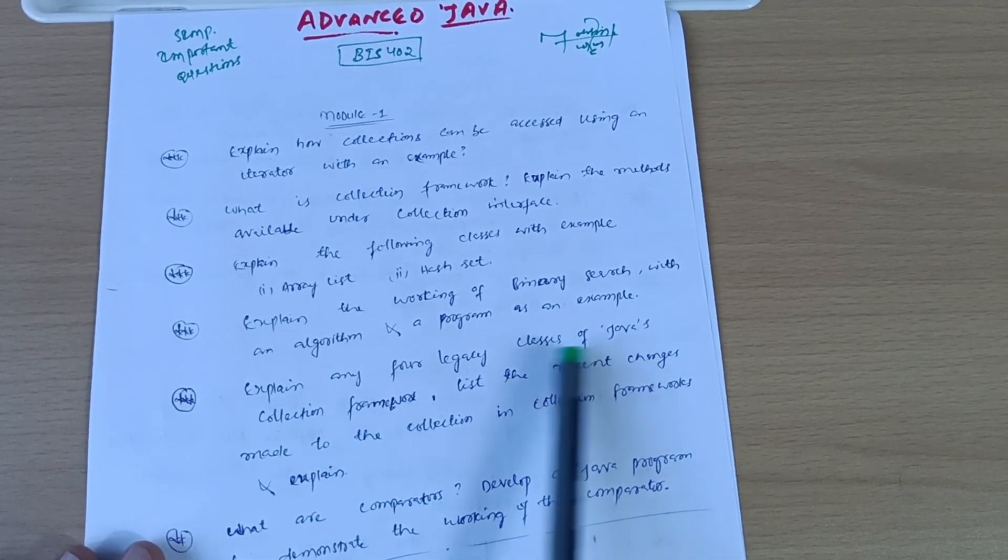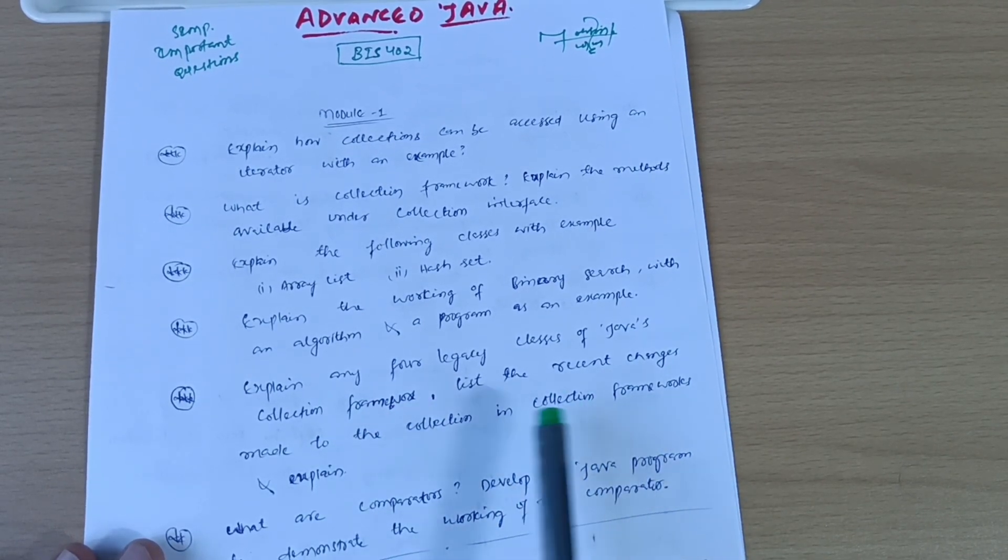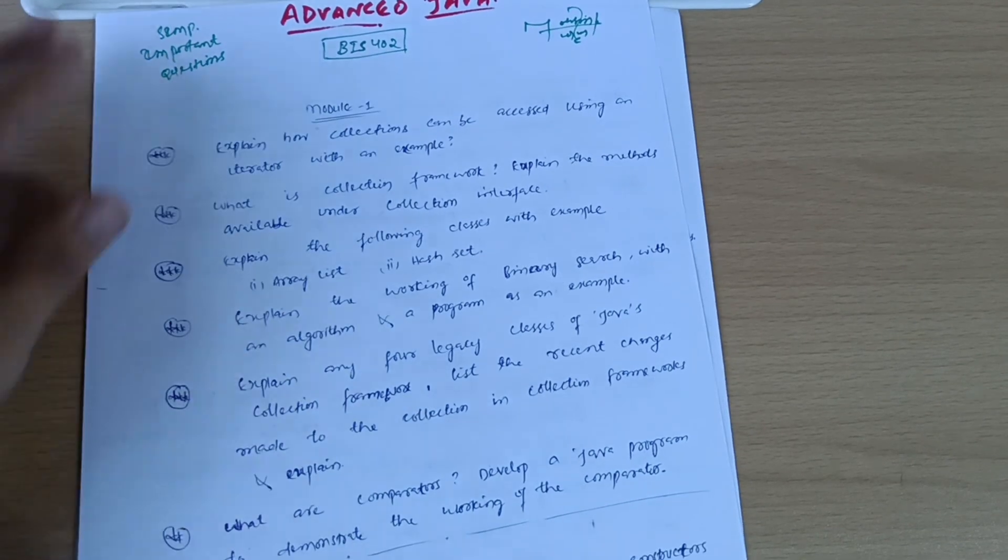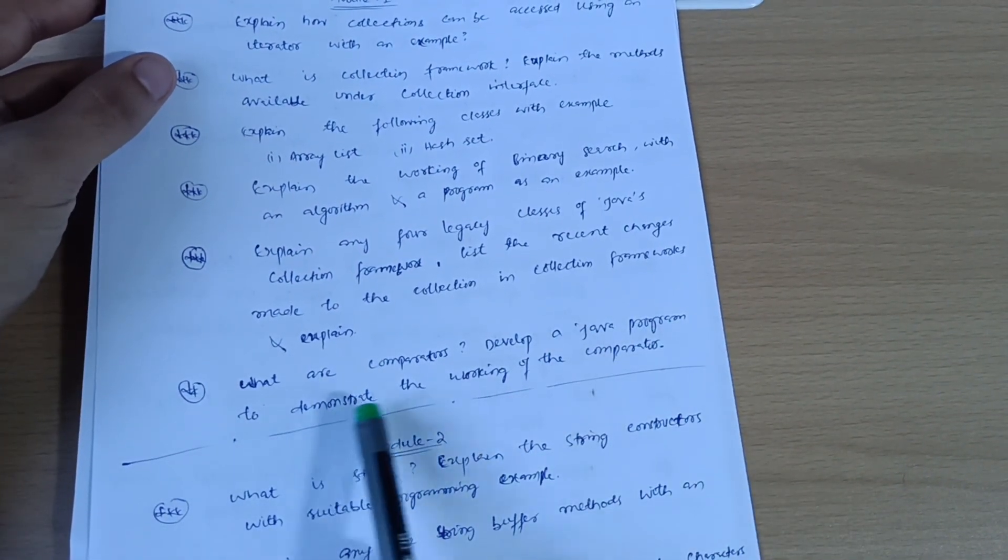Explain any four legacy classes of Java's collection framework. List the recent changes made to the collection in collection frameworks and explain. Last question from module first is: what are comparators? Develop a Java program to demonstrate the working of the comparator.